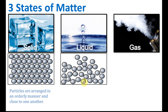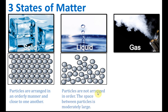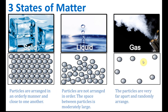For liquid, the particles are still close to each other, not as close as solid, but still very close. However, they are not arranged in order. The space between the particles is moderately larger compared to a solid, but they are still quite close. For gas, you can see that the particles are very far from each other and not arranged in an orderly manner — they are randomly arranged.